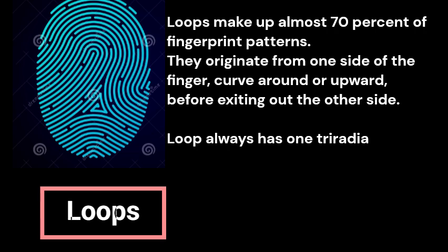The second type of fingerprint pattern is called a loop. Loops are the most commonly occurring fingerprint patterns. In a loop, the ridges originate from one side of the finger, then curve around before exiting towards the other side of the finger. A loop always has one triradius.